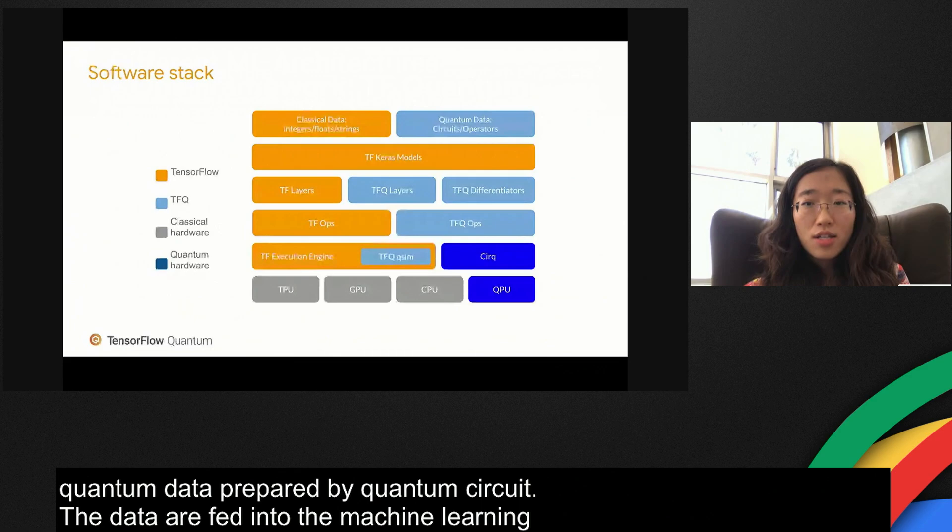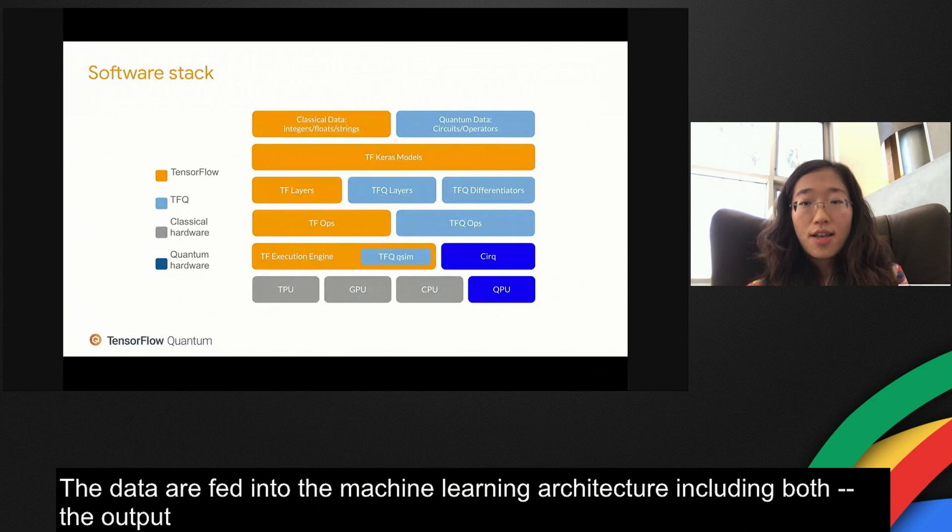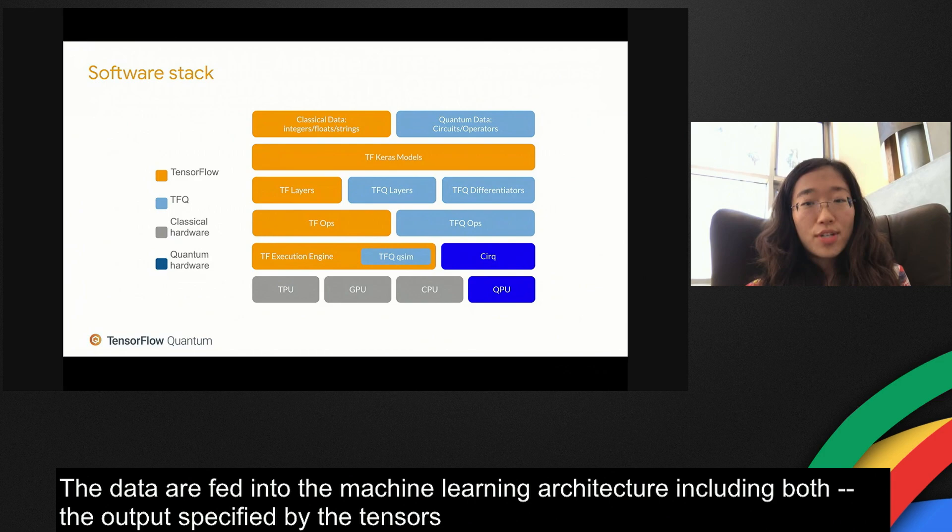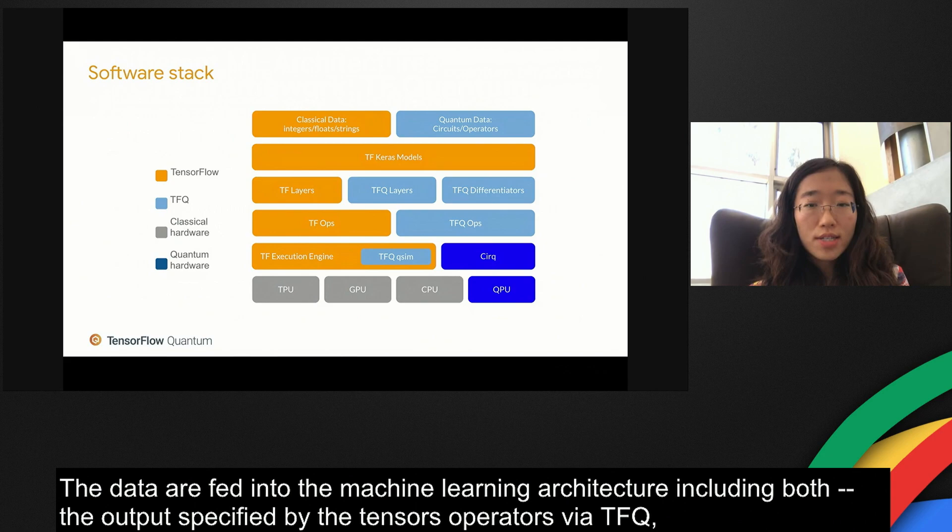The output specified by the tensor operators are passed down to the hardware backend, be it TPU, CPU, or QPU, through TensorFlow, Cirq, or qsim simulator, depending on whether one requires simulation of the quantum measurement or execution of the quantum circuit in the lab.